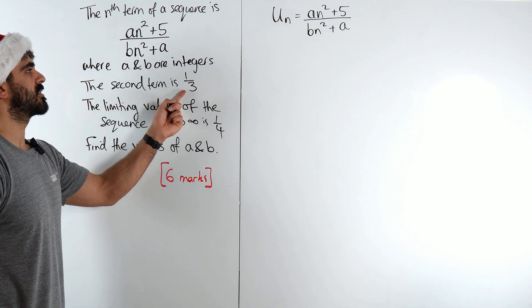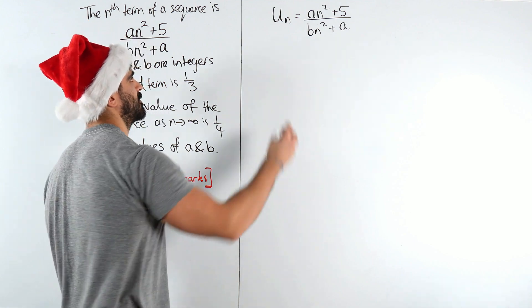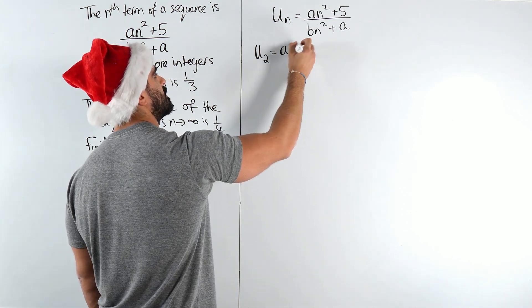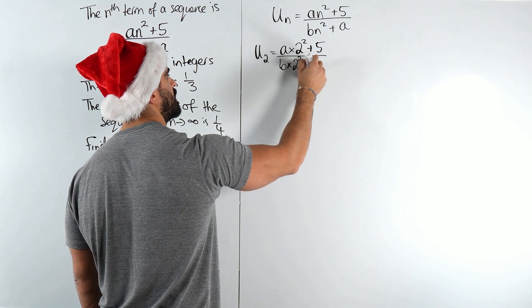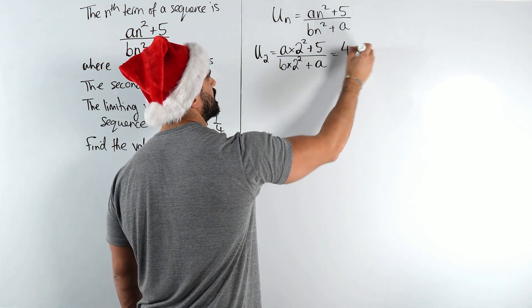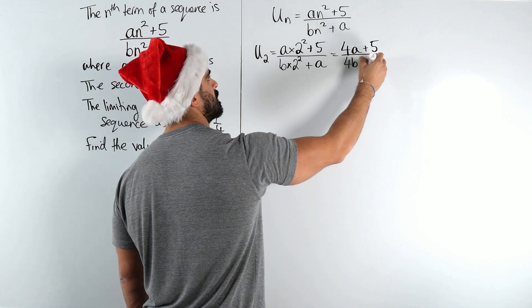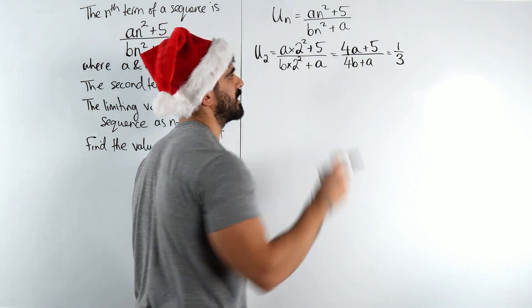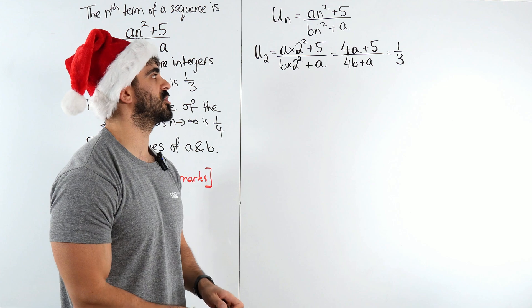So the second term is a third. Second term meaning n is 2. I just looked down by the way, I thought I didn't have my mic on. So I had u2, that's what we'd write down when n is 2. So we say u2 is a times 2² + 5 divided by b times 2² + a. How does that simplify? That's 4a + 5 divided by 4b + a, and we're equating that to a third. Now this already has given me simultaneous equations vibes, because we have one equation with a and b in it and it equals a number. We're going to need another equation and solve simultaneously.